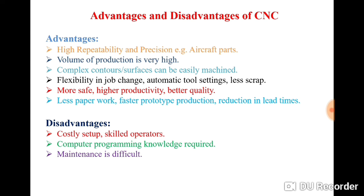Production is classified into three types: job production, batch production, and mass production. CNC machines are best suited for batch production. In job production, an industry manufactures only a single product in a year or a month. The best examples of job production are ship building and aeroplane manufacturing, where the industry manufactures one or two aeroplanes in a year.